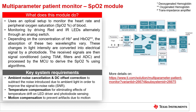The key system requirements for the SpO2 module are: ambient noise cancellation and DC offset correction, to subtract noise introduced due to ambient light in order to improve SNR; temperature compensation, for eliminating effects of temperature drift on LED driver and photodiode sensing; motion compensation, to prevent artifacts due to motion; small form factor, for easy adaptation to portable applications; and low power consumption, to maximize battery life while driving multiple LEDs, such as RED or infrared.